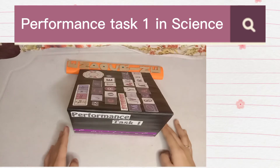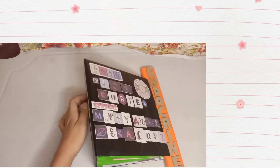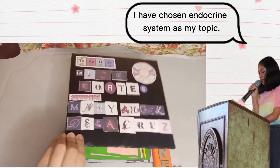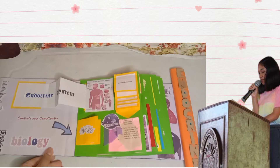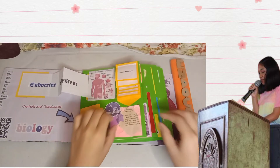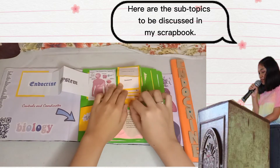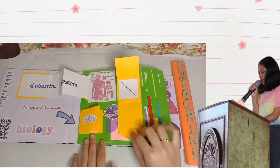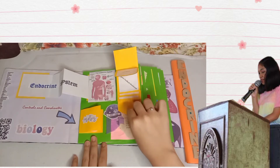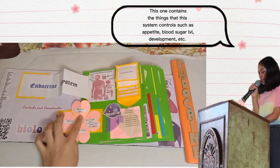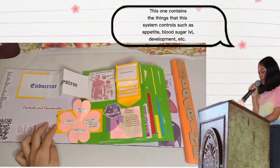Performance Task 1 in Science. I have chosen the endocrine system as my topic. Here are the subtopics to be discussed in my scrapbook. This one contains things that this system controls, such as appetite, blood sugar level, development, etc.